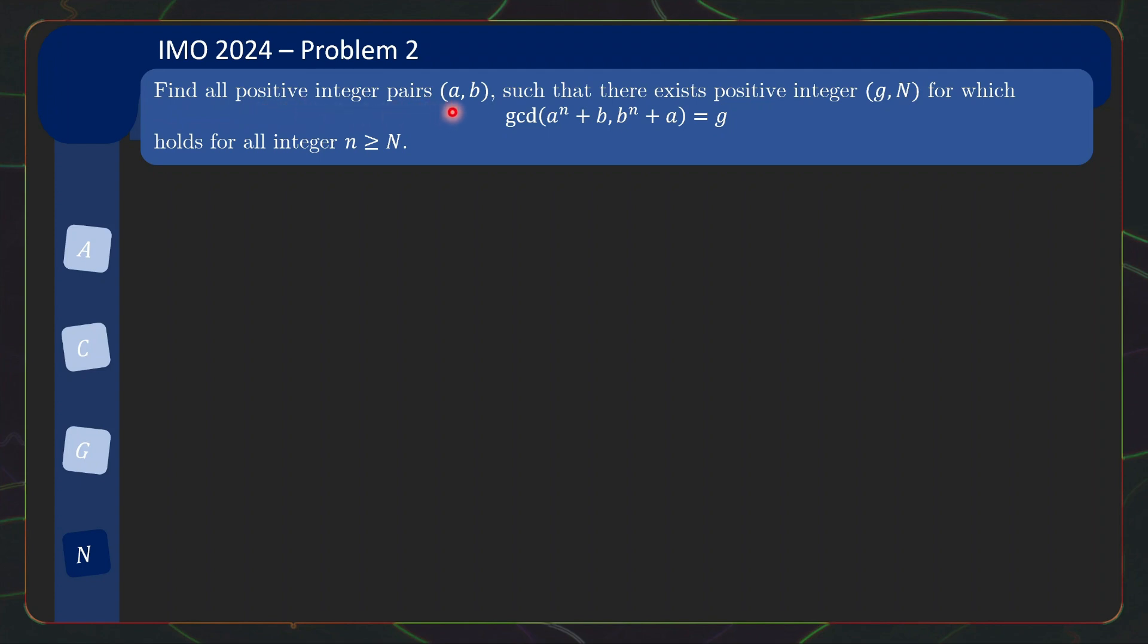Find all positive integer pairs (a, b) such that there exists positive integers g, N for which gcd(a^n + b, b^n + a) = g holds for all integers n ≥ N. This is basically saying that you want to find all the pairs a, b such that if you look at this gcd expression, you can actually increase n from 1 to infinity and this gcd will eventually become constant.